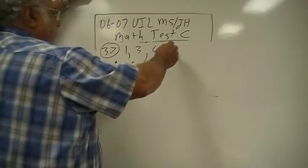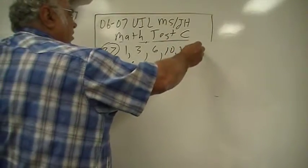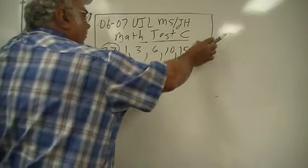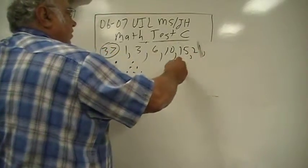Which would be ten. Then five is fifteen, six is twenty-one, seven is twenty-eight.